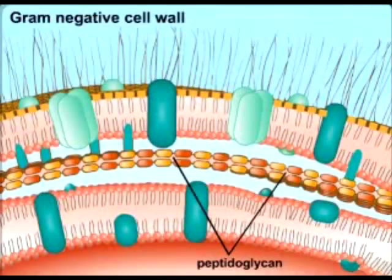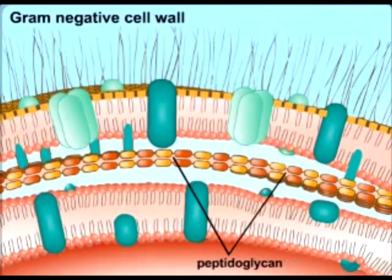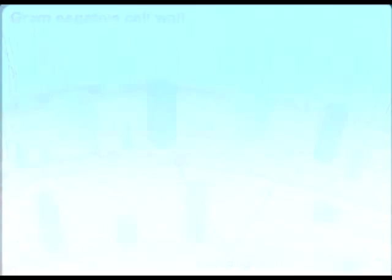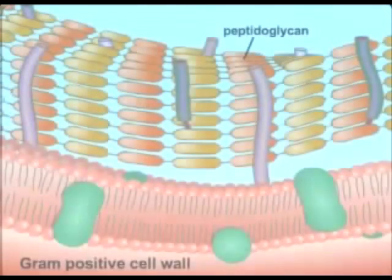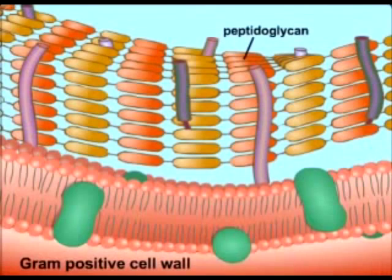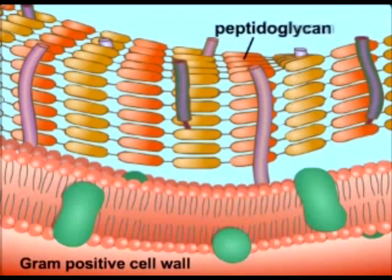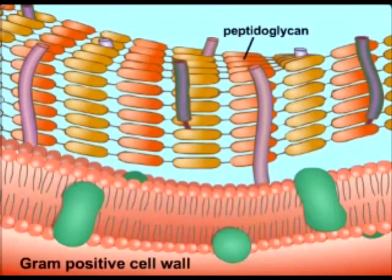Most bacterial cell walls contain peptidoglycan. This structure is essential for maintaining the structural integrity of the cell. Peptidoglycan is unique to bacterial cells, and this combination of essential and unique makes peptidoglycan an excellent target for antibiotics.